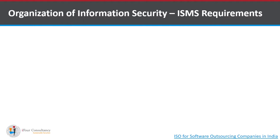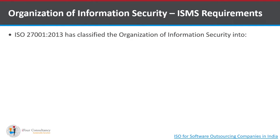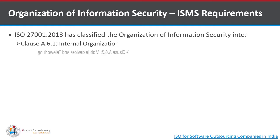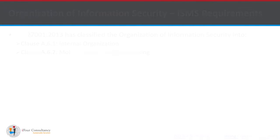Mapping the information security management requirements with the ISO standard, i.e. ISO 27001:2013, organization of information security has been divided into Clause A.6.1, i.e. internal organization, and Clause A.6.2 that focuses on mobile devices and teleworking. Let's see what's there in each of them.